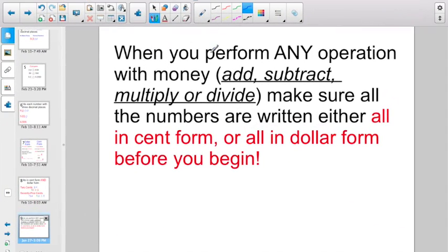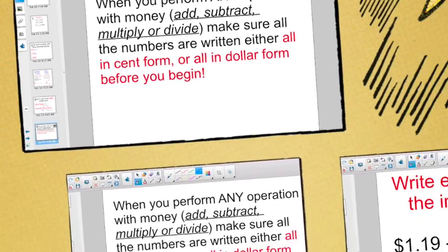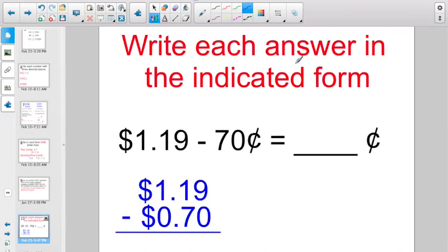The big thing to remember when you perform any operation with money, whether it's add, subtract, multiply, or divide, is to make sure that the numbers are written either all in cent form or all in dollar form before you begin. If you have one number with a decimal point and another number without a decimal point, that could cause all kinds of trouble for you, right? So, write each answer in the indicated form. Here they're giving you something in dollar form. Here they gave it to you in cent form, but they want the answer in cent form. My advice, start off with dollar form just so you can line up your decimal points, right?